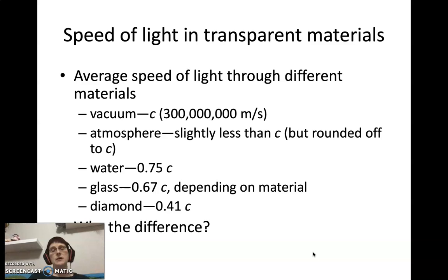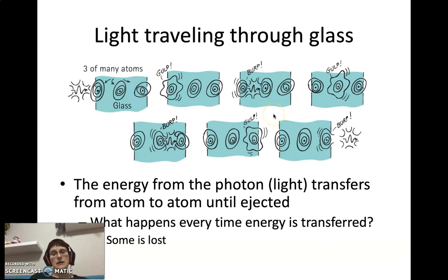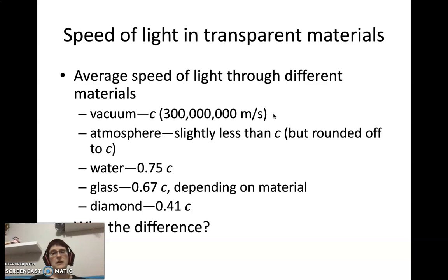Now, if you remember when we talked about the speed of sound, the speed of sound is about 330 meters per second in air. Now, sound couldn't travel through a vacuum because sound needs material to vibrate. However, light, because light is an electromagnetic wave, it can travel through a vacuum because it doesn't need material to vibrate.